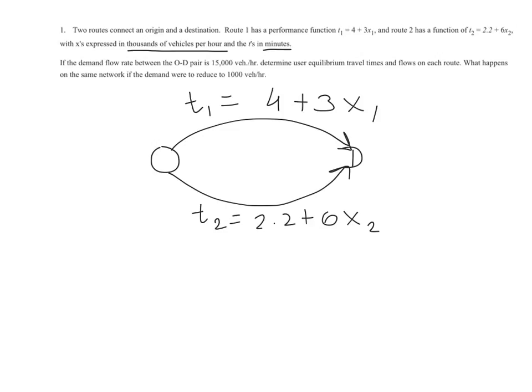I'm inclined to take route 2 because if both routes were empty, that means x1 is equal to 0 and x2 is equal to 0. And under that scenario, route 1 will take 4 minutes to the destination versus route 2, which only will take 2.2 minutes. So under that scenario, route 1 is at the risk of not being used.